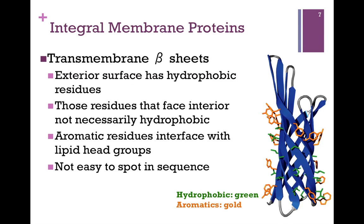There are other residues facing the internal portion of that barrel, which is an aqueous environment, so those tend to be more hydrophilic. We also find aromatic residues interacting with the lipid head groups at either end of that bilayer. Since we have alternating amino acid residues — some facing outward that are hydrophobic, and some facing inward that are hydrophilic — we can't easily spot this sequence in the primary structure. In our illustration, the beta barrel is shown in blue, hydrophobic residues in green facing external, and aromatics in gold interacting with the polar head groups.